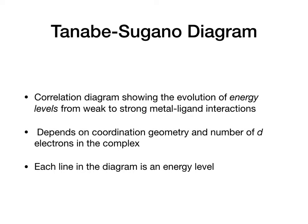The Tanabe-Sugano diagram is basically a correlation diagram that shows the evolution of energy levels of transition metal complexes from weak to strong metal-ligand interactions. It shows how the energy of the system — and I want to emphasize, the energy of the system, not the energy of the electrons — changes as you change the strength of ligand-metal interaction. The diagram depends on the particular coordination geometry and the number of electrons in the complex. Each line in the diagram represents an energy level of the whole system.